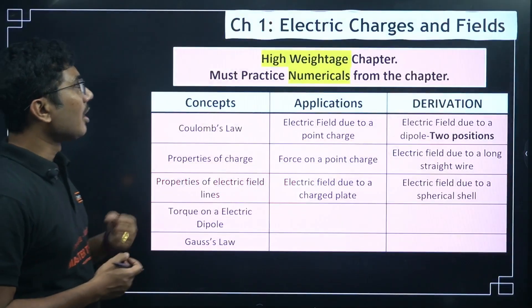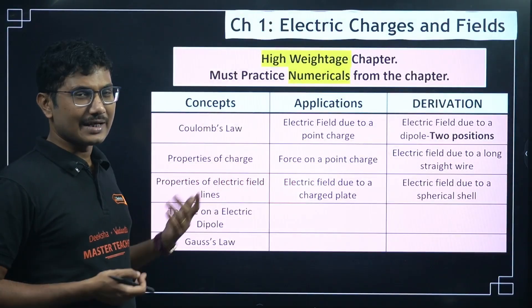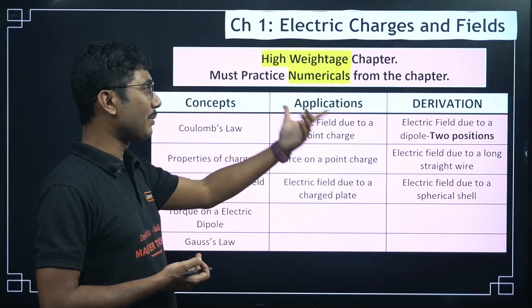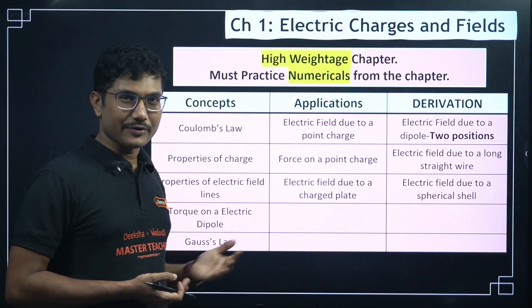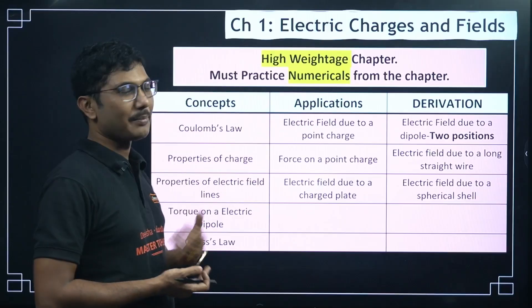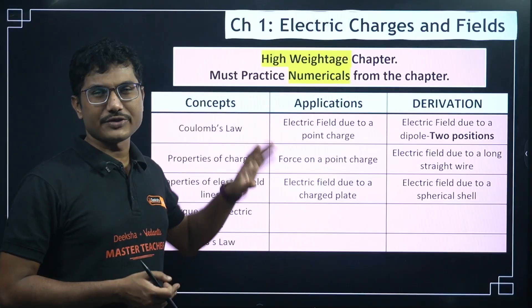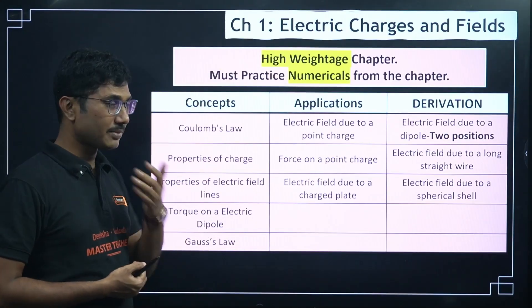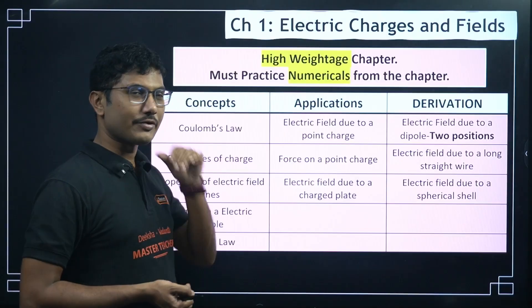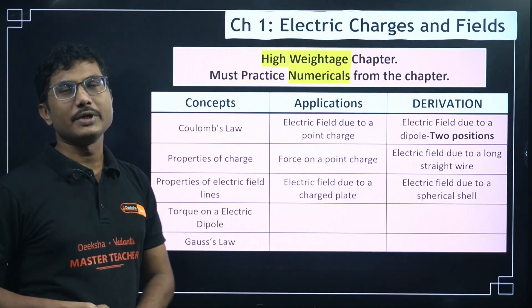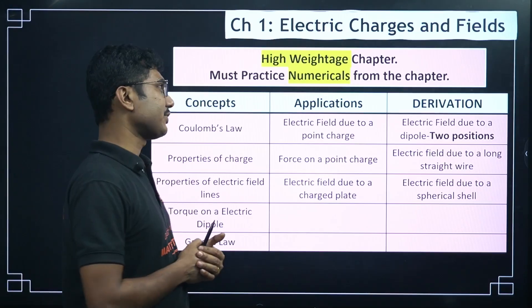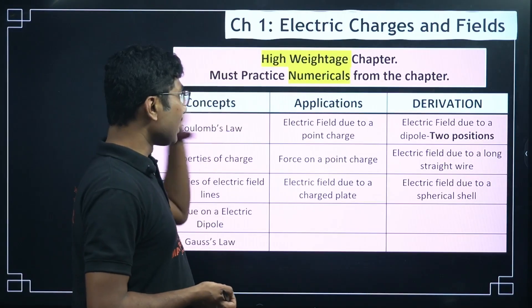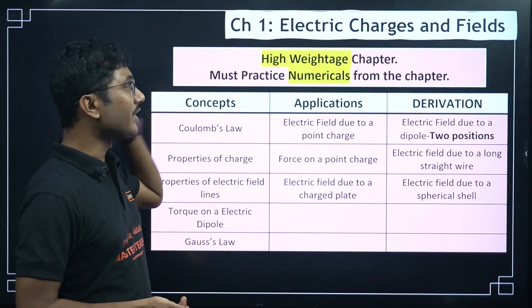Now let us move on to the chapter-wise breakdown. For each chapter we will discuss important concepts and what type of application-based questions might come. Application-based questions are slightly difficult questions — there are memory-based, application-based, and higher-order thinking questions. Derivations are generally considered application and higher-order thinking level. First chapter: Electric Charges and Fields — this is a very high-weighted chapter and you must practice numericals from it. There is a high possibility that a 5-mark numerical will come from this chapter.